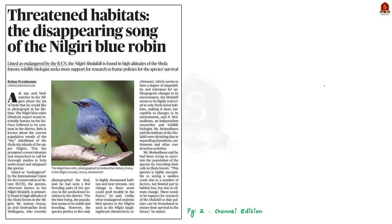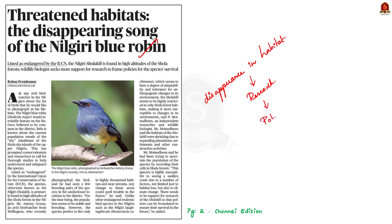The next article talks about the Nilgiri Blue Robin. This bird species is in news because of its disappearance in its habitat. The article says there is a need for research about this bird species, and if research is done, policies can be formulated to ensure their survival in the future. This is the crux of the news article. In this context, let us discuss about the Nilgiri Blue Robin in a prelims perspective.